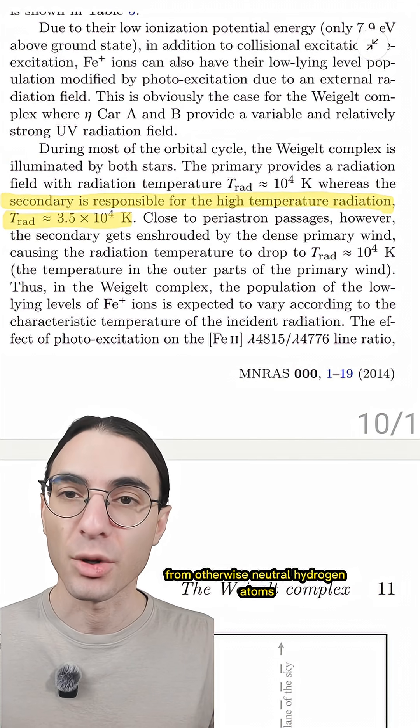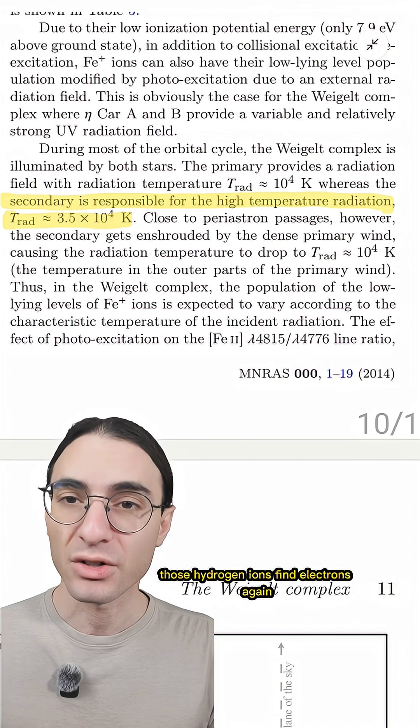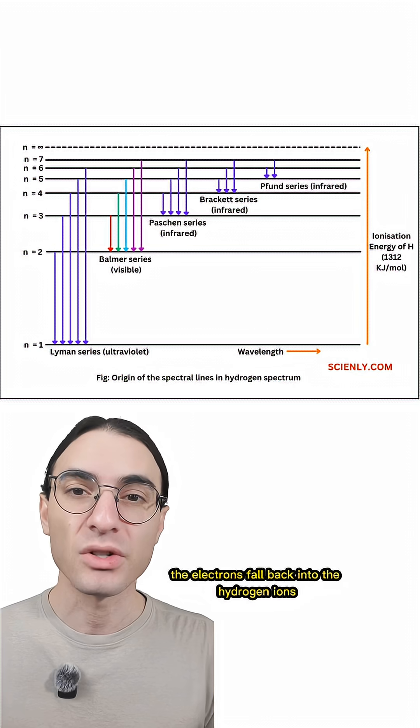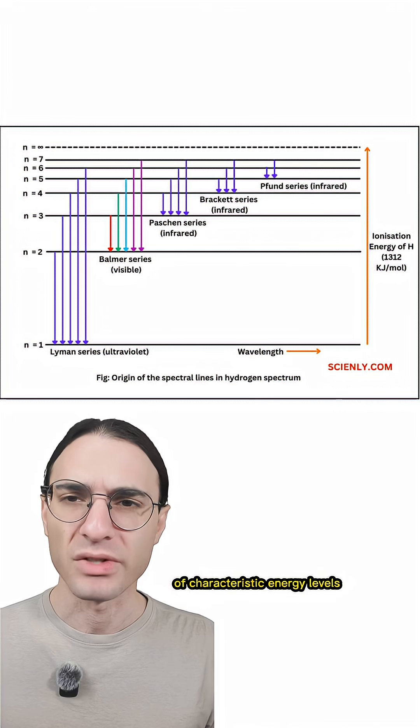Consequently, electrons are knocked away from otherwise neutral hydrogen atoms. Eventually, of course, those hydrogen ions find electrons again, and when they do, the electrons fall back into the hydrogen ions with such force that they give off light of characteristic energy levels in fact.